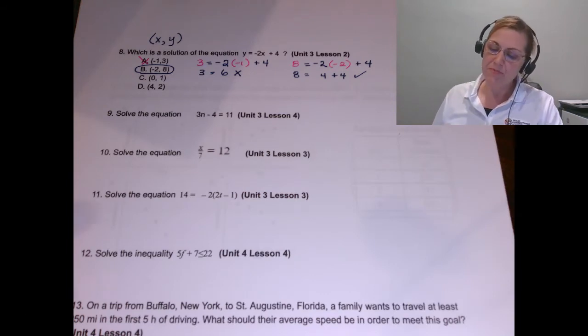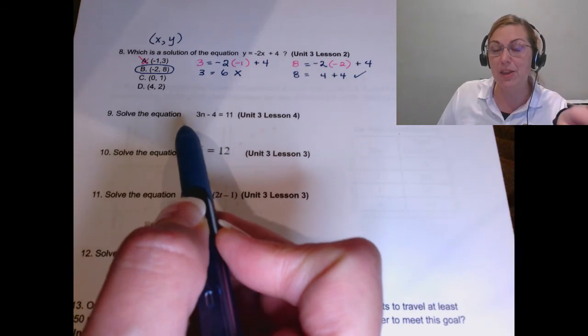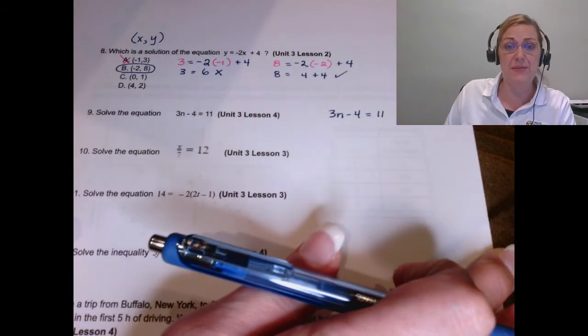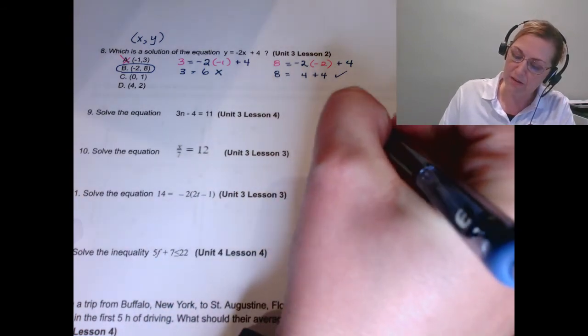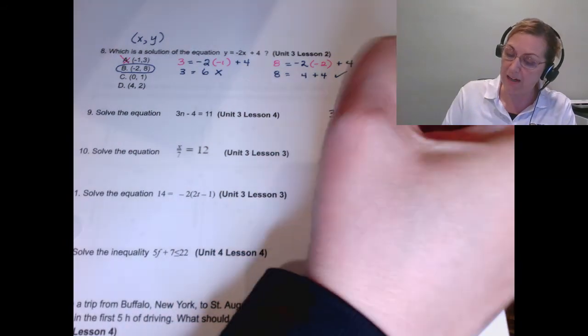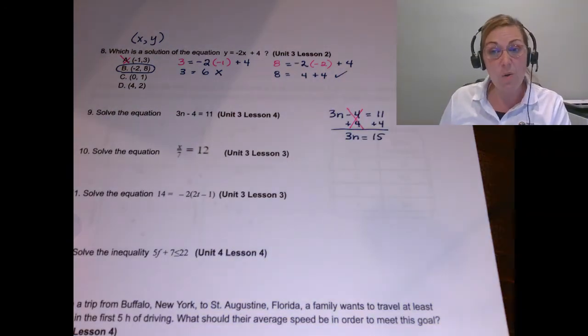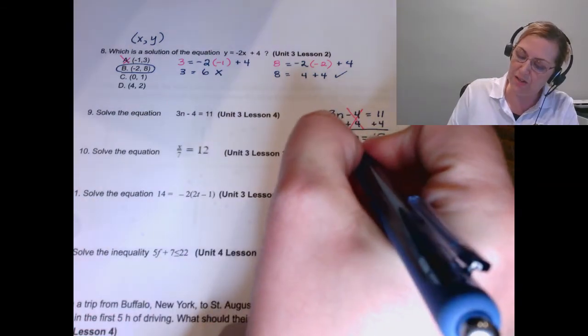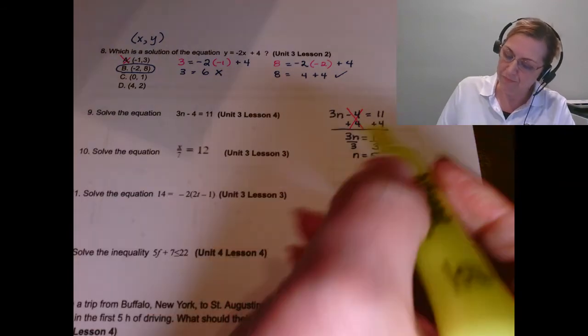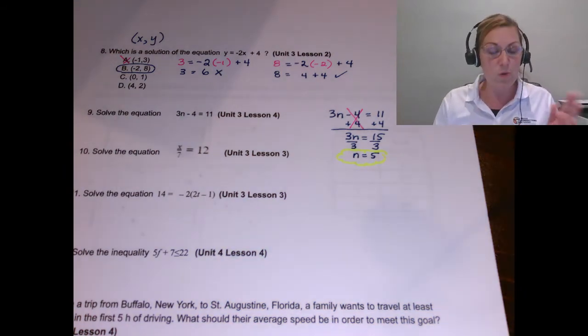Let's look at number nine. On number nine, we ask ourselves what's happening to the variable. What's happening to N? It's being multiplied by three. It's being subtracted by four. So we're going to do the opposite of subtracting four. The opposite of subtracting four is to add four to both sides. That gives me 3N. Notice that minus four plus four cancels each other out. Equals 15. And now I'm going to do the opposite of multiplying by three. The opposite of multiplying by three is to divide by three. And so N is five. And that will be my answer. Now, don't forget, you can always go back in, plug in five for N and see if you get the same on the other side. That's one way to check your answer.